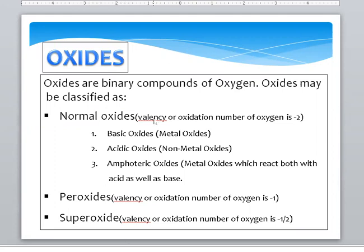What is a Normal Oxide? In a Normal Oxide, the valency or oxidation number of Oxygen is minus 2. As you know, Oxygen is from group 6, having 6 electrons in its valence shell. It requires 2 more electrons to complete its octet, so it can gain 2 electrons, giving it an oxidation number of minus 2.